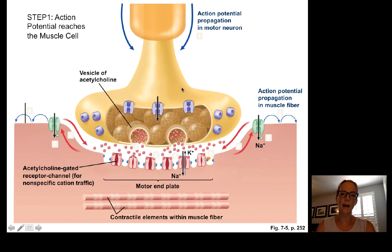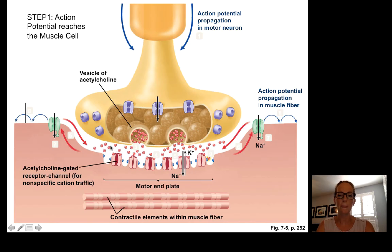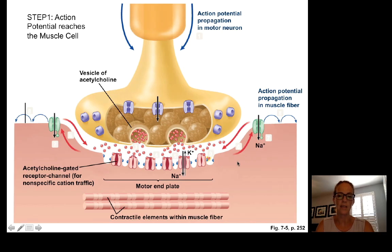At the synapse, the action potential travels down the motor neuron, triggering neurotransmitter release. The neurotransmitter — acetylcholine — travels across the synaptic cleft and binds to acetylcholine receptors on the muscle cell membrane. These receptors are ion channels; when acetylcholine binds, sodium rushes into the muscle cell membrane. When sodium rushes in, an action potential is generated in the muscle cell itself, which then travels down the muscle cell.